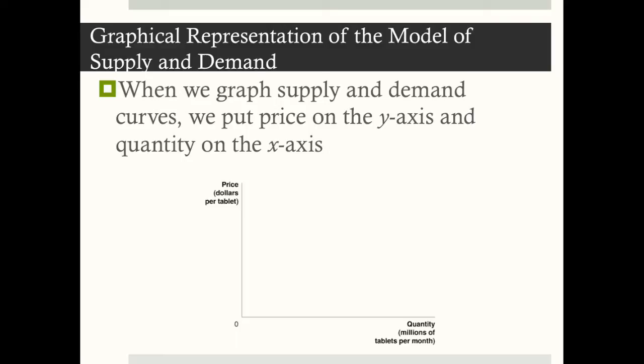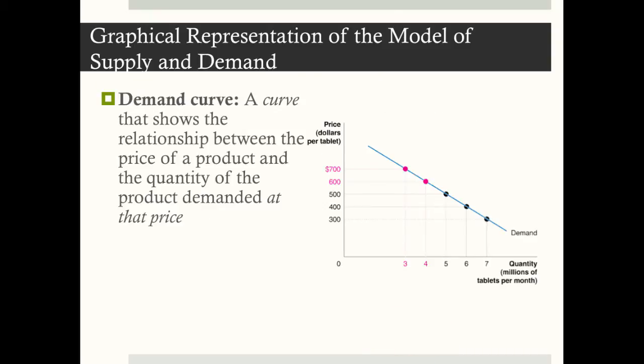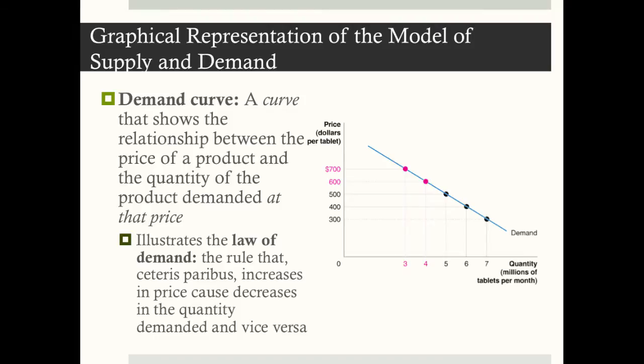When we graph supply and demand curves, we put price on the y-axis and quantity on the x-axis. A demand curve is a curve that shows the relationship between the price of a product and the quantity demanded at a particular price. It illustrates the law of demand, which is a rule that Ceteris Paribus — holding every other factor or variable constant — increases in price cause decreases in the quantity demanded, and vice versa.